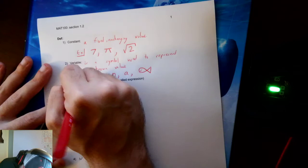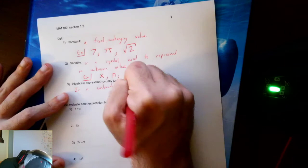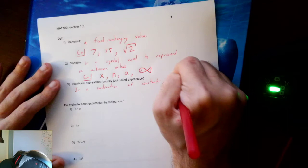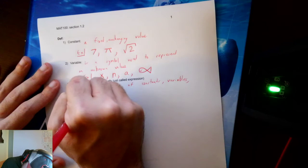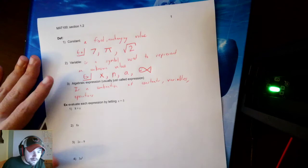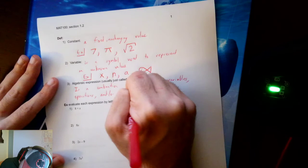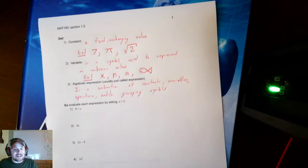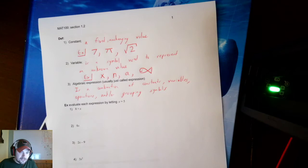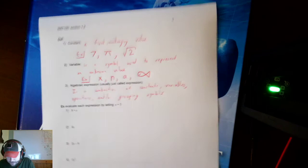And then an algebraic expression is a combination of constants, variables, operations—operations being plus, minus, times, divide, exponents—and or grouping symbols. An algebraic expression is a combination of constants, variables, operations, and or grouping symbols. It does not have an equal sign in it. That makes it an equation if it has an equal sign. And we'll have that definition in a moment.